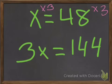As you see, I multiplied this side by 3, so I have to multiply this side by 3 so they both are equal.